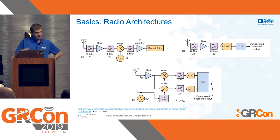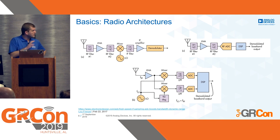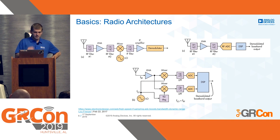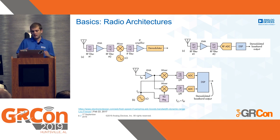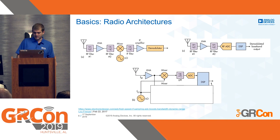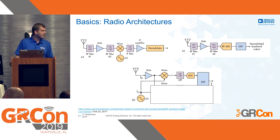Earlier today you may have caught Travis's lightning talk about all the different transceivers, which included a slide about different radio architectures: the superheterodyne in the top left, the direct RF on the top right, and the zero IF on the bottom. What we're trying to do here is create a zero IF transceiver where we get data from the antenna, amplify it, down-convert it with a mixer, and then use the M2K to do the digital signal processing.